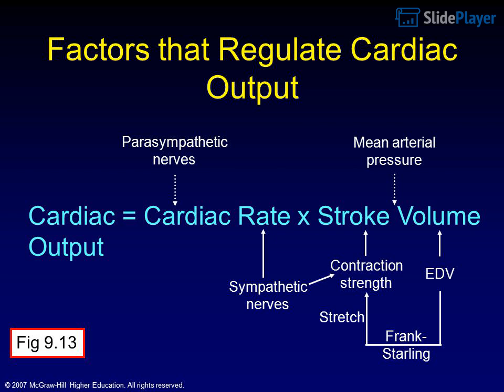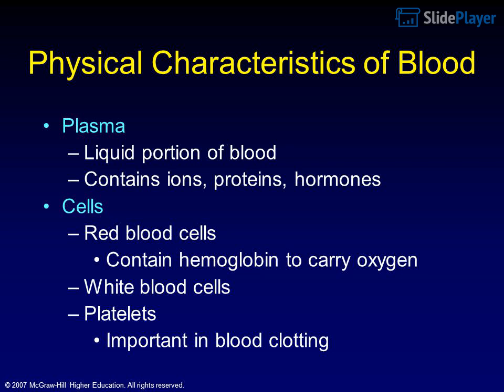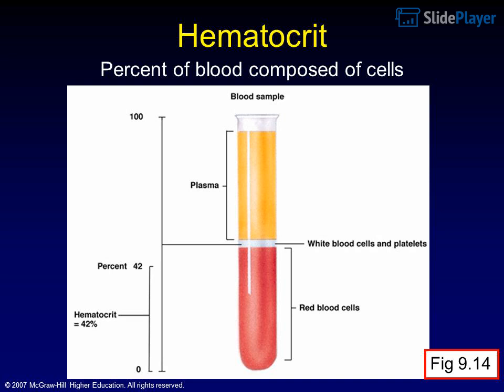Hemodynamics is the study of the physical principles of blood flow. Physical characteristics of blood: plasma is the liquid portion of blood containing ions, proteins, and hormones. Cells include red blood cells, which contain hemoglobin to carry oxygen; white blood cells; and platelets, which are important in blood clotting. The percent of blood composed of cells is called hematocrit, shown in Figure 9.14.